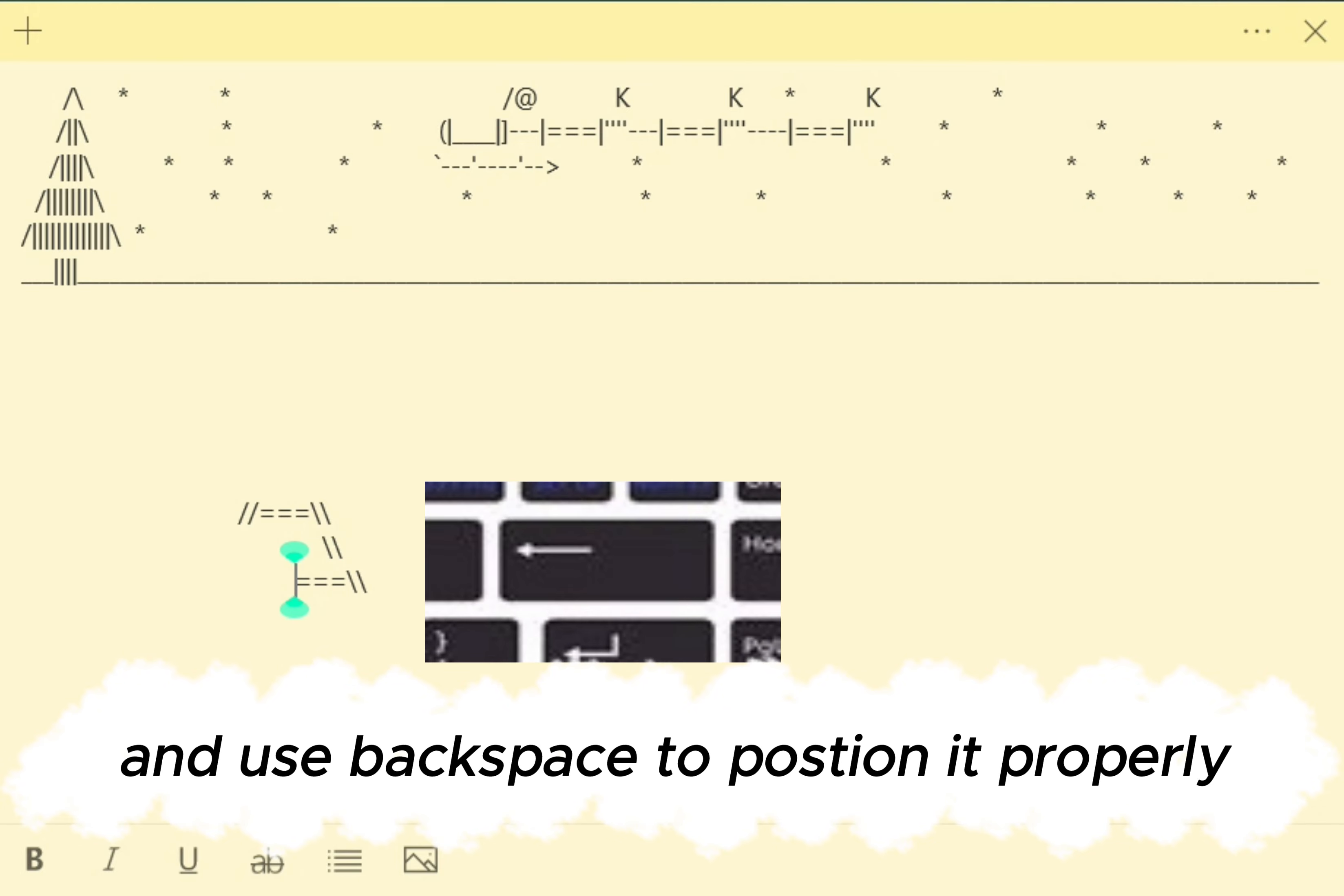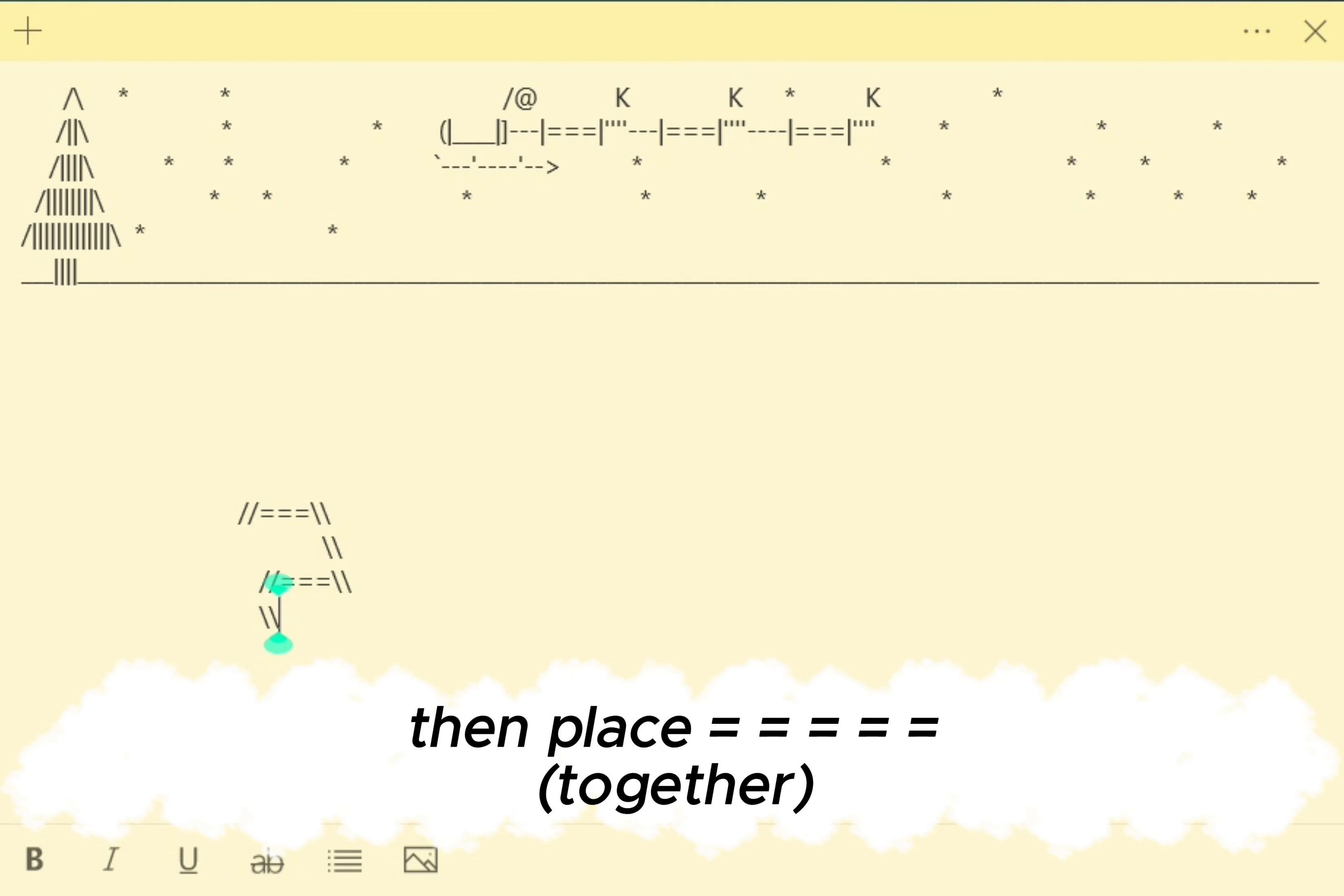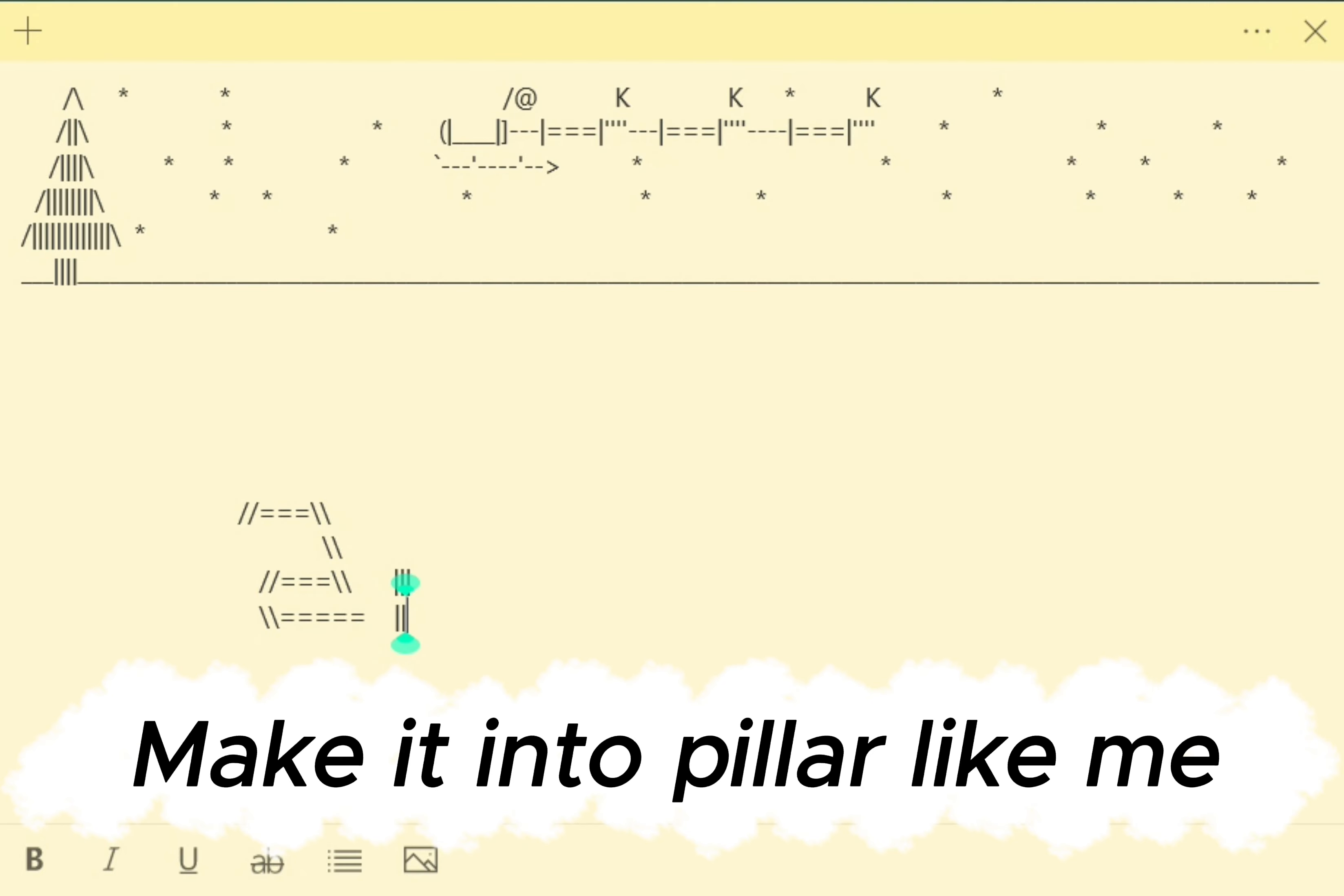And use backspace to position it properly. Now add at front. Reposition it and put under it. Then place together. Our two is done. Use space bar to create space. Put. Make it into pillar like me.